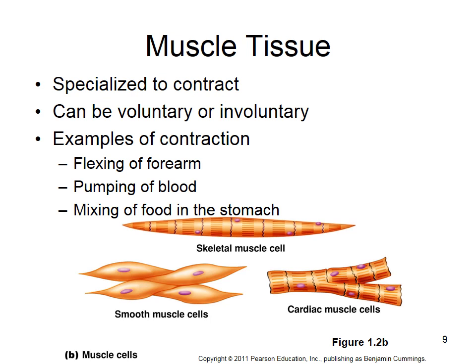Flexing your forearm uses skeletal muscle — it's under conscious control. Pumping of blood uses cardiac muscle — not under conscious control. Mixing of food in the stomach uses smooth muscle — also not under conscious control. About one-third of the way down the esophagus, we switch from skeletal muscle, and the rest is all smooth muscle.